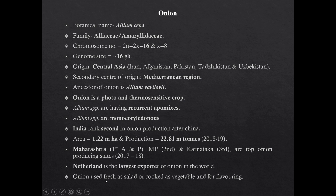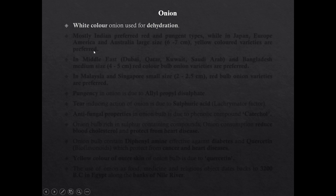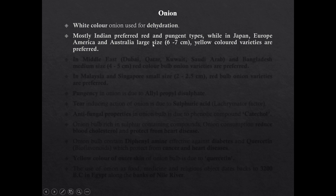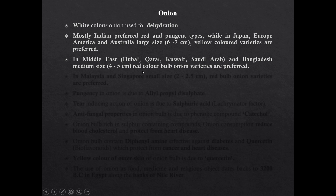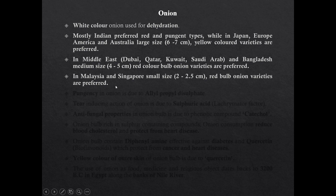Onion is used as fresh, as salad, or cooked type vegetable and for flavoring. White color onion is used for dehydration. Mostly Indians prefer red and pungent type of onion. While in Japan, Europe, America, and Australia, large size yellow color onion bulbs are preferred. In the Middle East and Bangladesh, medium size red color onion are preferred. And in Malaysia and Singapore, small size red color onion are preferred.